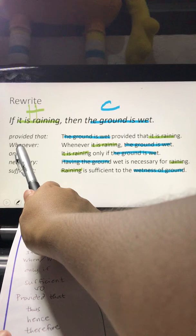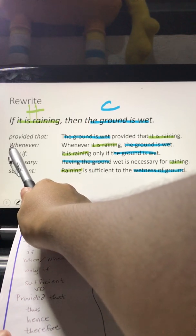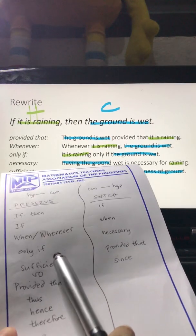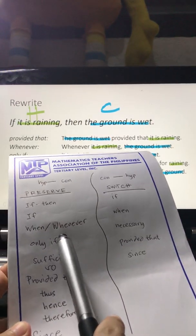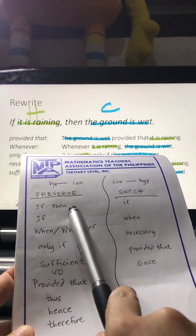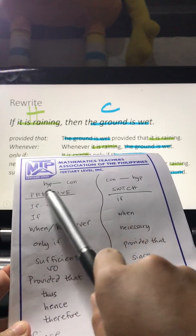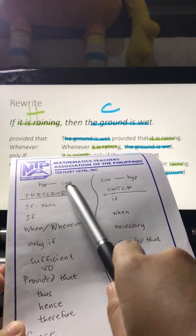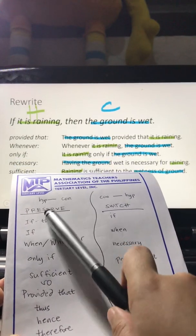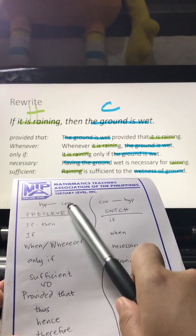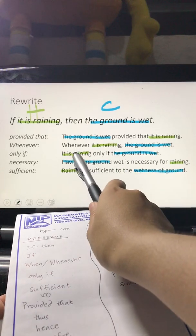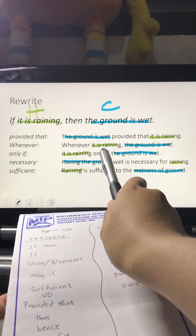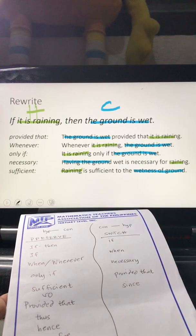'Whenever' — uppercase at the start of the statement — falls under preserve. So the hypothesis comes first at the beginning of the statement, and the conclusion is at the latter part. The pattern is: whenever hypothesis, conclusion.